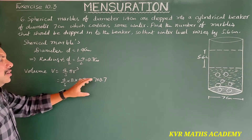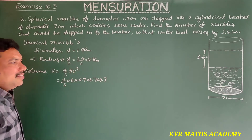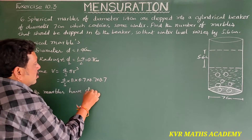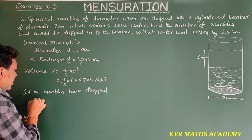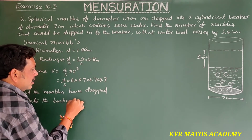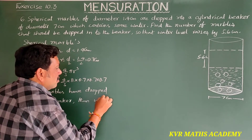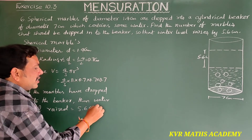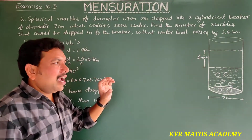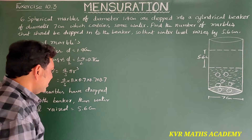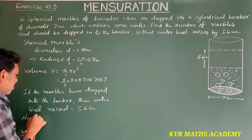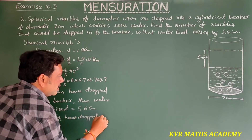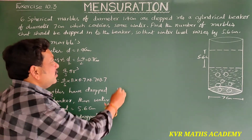When the marbles are dropped into the beaker, the water level rises by 5.6 centimeters. So the height of the cylinder is taken as 5.6 centimeters. Let the number of marbles dropped be equal to x.